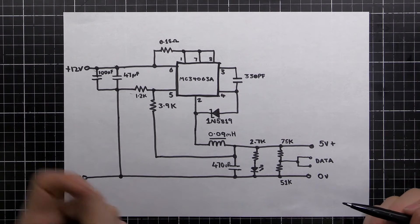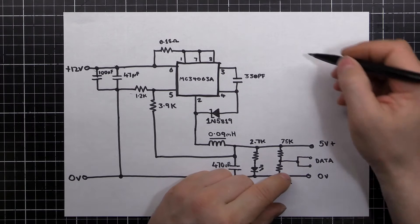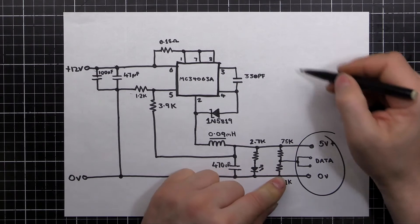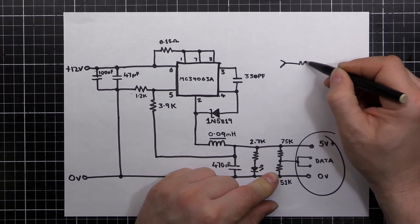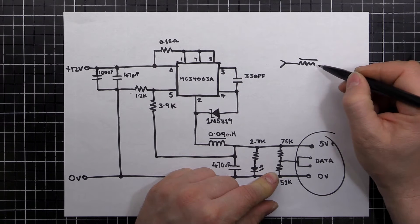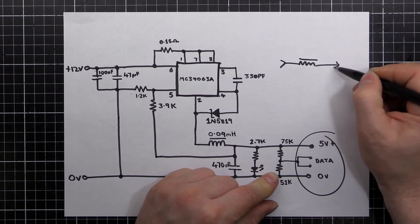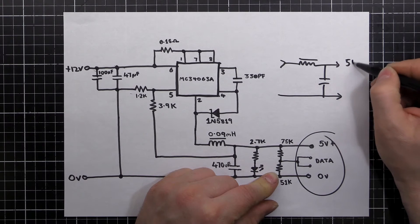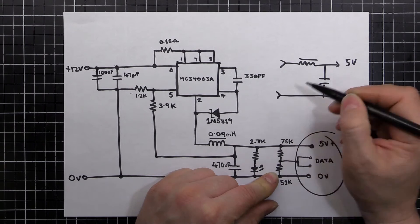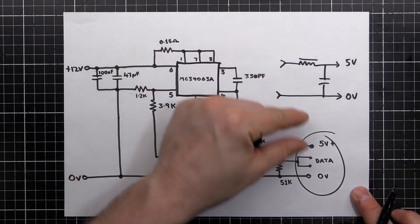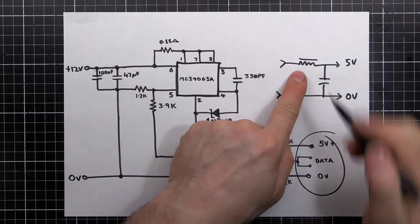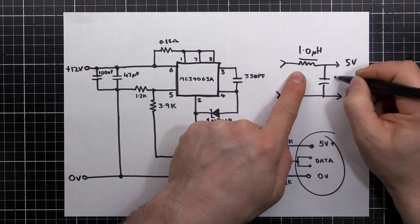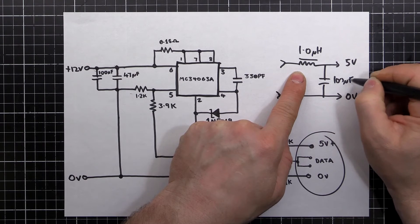There is another addition we can make to this circuit if we were inclined to spend a little bit more money. And that is from our five volts and zero volts here, we can add an inductor and a capacitor down to ground. So we got five volts here, zero volts here. So if we were to add this here onto here, this inductor, 1.0 micro henry, and a 100 micro farad capacitor.